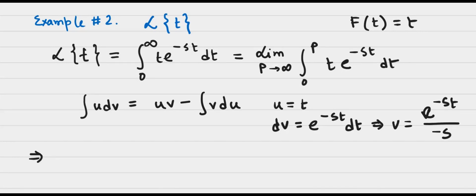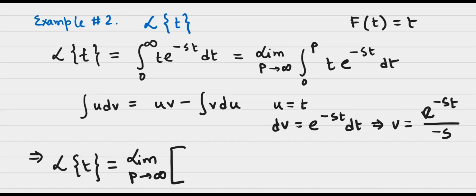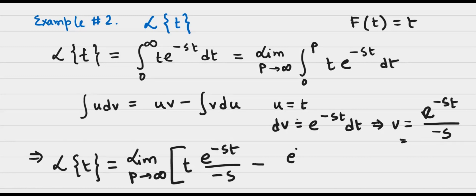So the Laplace transform of t equals the limit as p goes to infinity, and then the integration by parts. At the beginning we have uv: t times e to the power negative st divided by minus s. Then we subtract the integral of v du. Since du/dt gives us 1, du is just dt, and so v du is simply e to the power negative st divided by s squared.